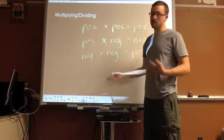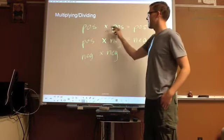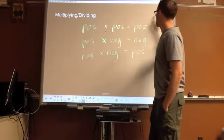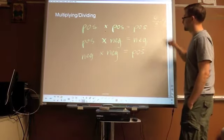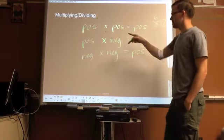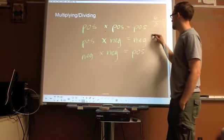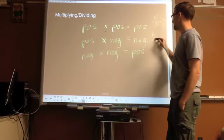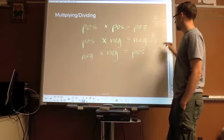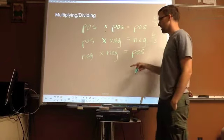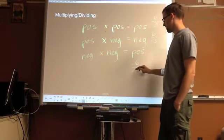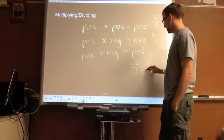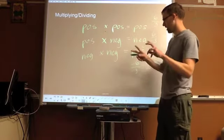This whole pattern goes for dividing too. Positive divided by positive, like six divided by three positives, we have positive two. Positive divided by negative will always be negative. So, if I did six divided by negative three, that would be negative two. Divided by negative would be positive. Negative six divided by negative three is positive two. Think of these as canceling out.